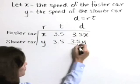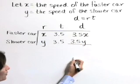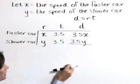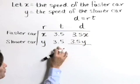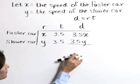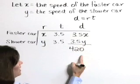Now I'm going to add another piece to this. We're told that these cars start a distance of 420 miles apart. After 3.5 hours, they meet, so they've covered a total of 420 miles.